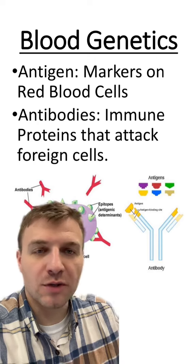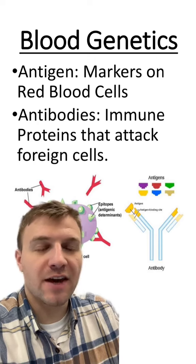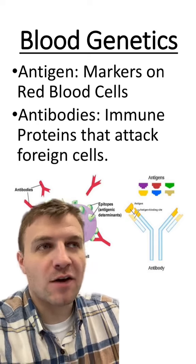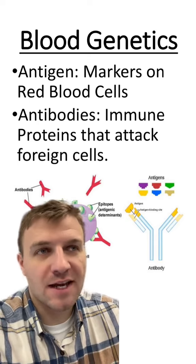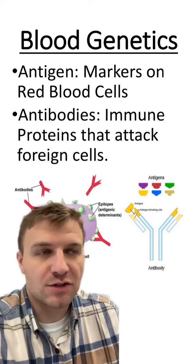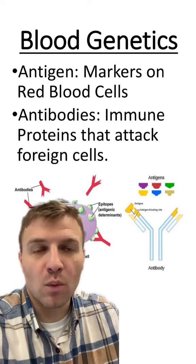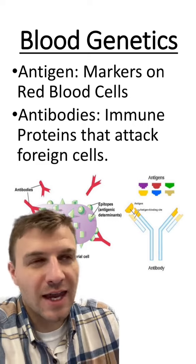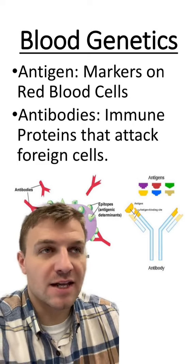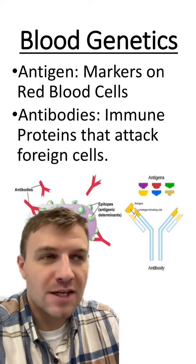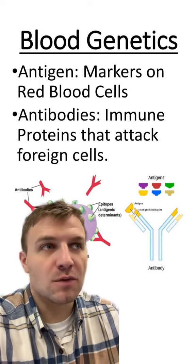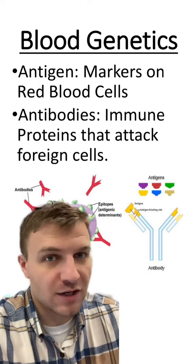These antigens help your immune system identify cells that are yours and cells that are foreign. These antigens can also be found on other types of cells and pathogens, and your immune system uses them to figure out what cells are trying to infect you. Antibodies are proteins made by your immune system that attack these antigens, and they also help identify foreign cells so your immune system can properly fight an infection.